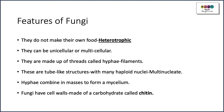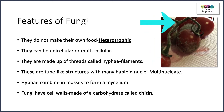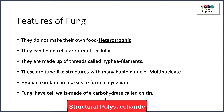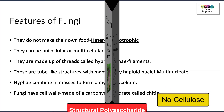Fungi are made up of threads called hyphae — one is a hypha. These are filaments, tube-like structures filled with many haploid nuclei, so they're multi-nucleate. Hyphae combine in masses to form a mycelium, and this is what's visible when you see mould growing on fruit or bread. Fungi have cell walls made of the structural polysaccharide chitin — they do not contain cellulose.